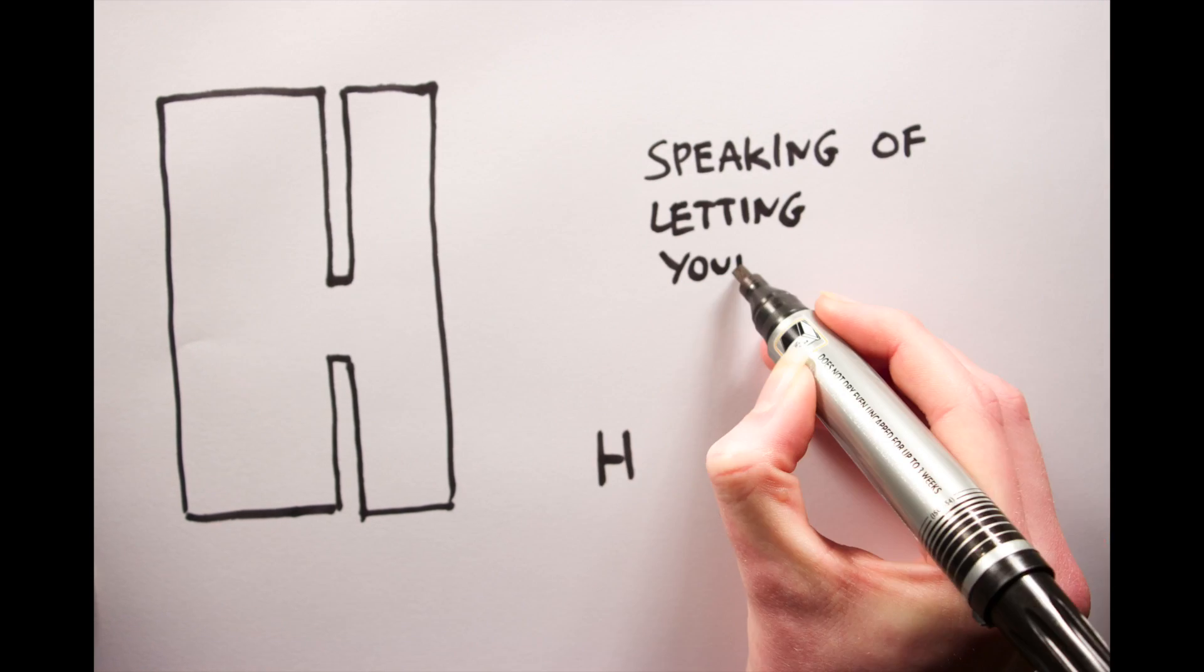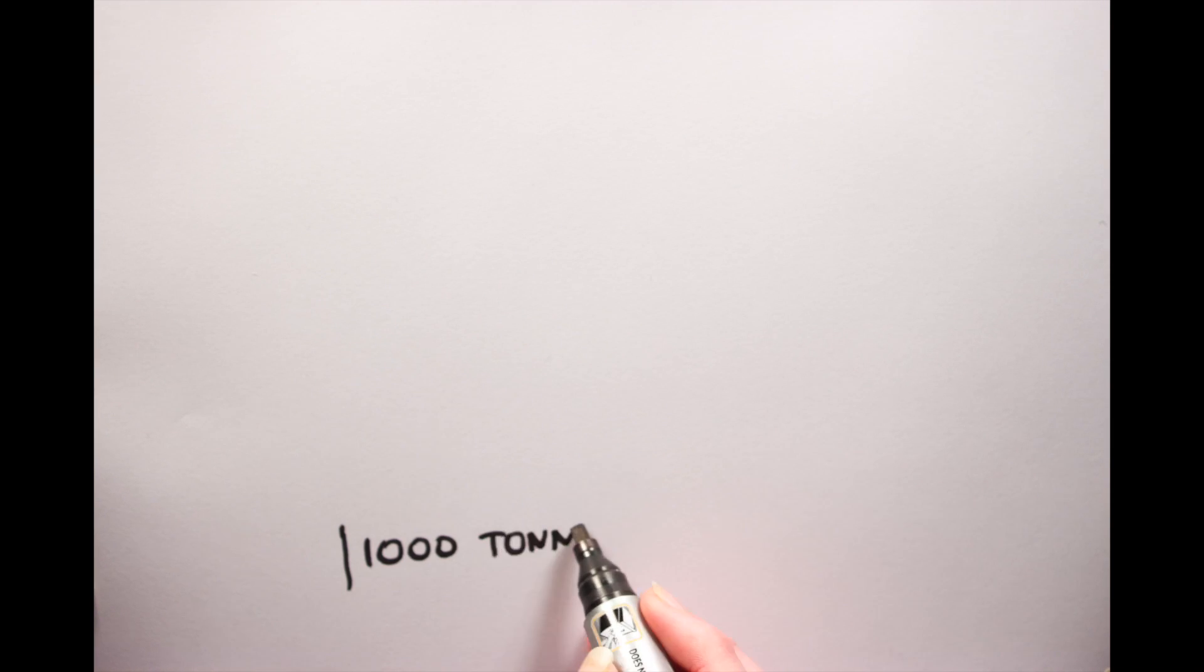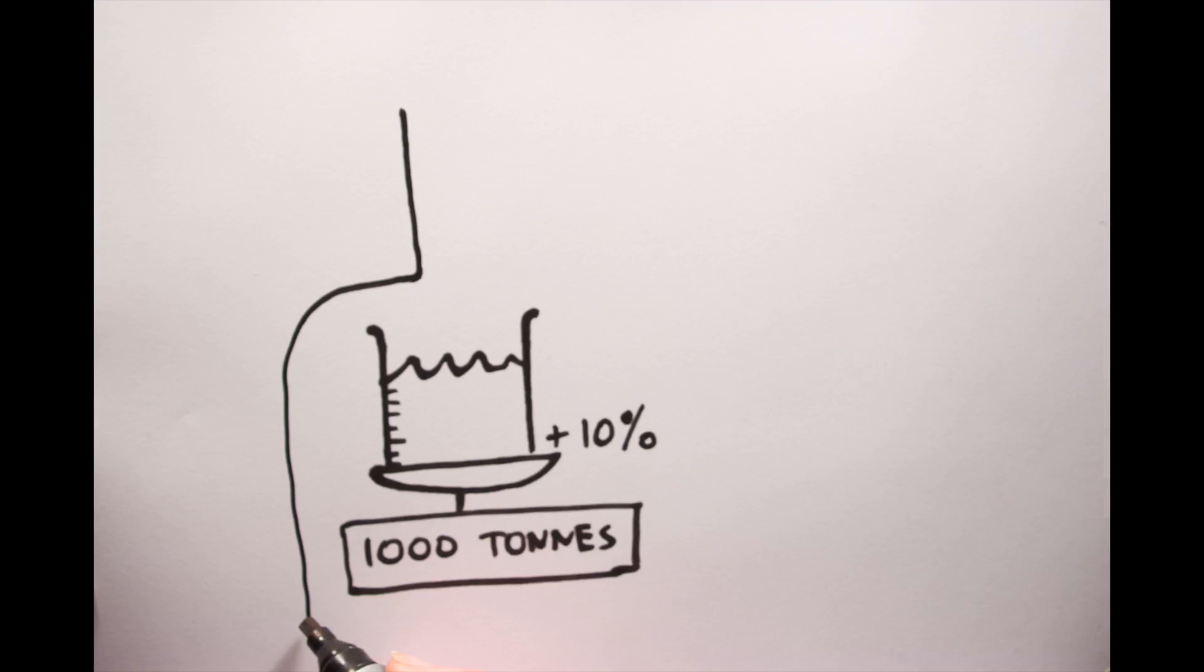Deuterium is an isotope of hydrogen with an added neutron, sometimes called heavy hydrogen. Tangent alert: heavy water, or deuterium oxide, is almost identical to regular light water except it is 10% heavier.